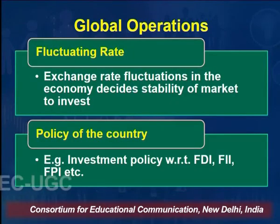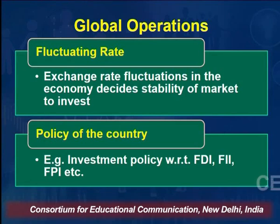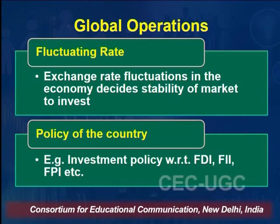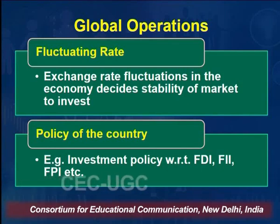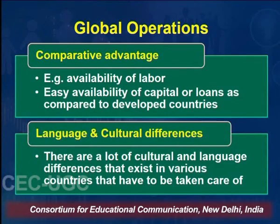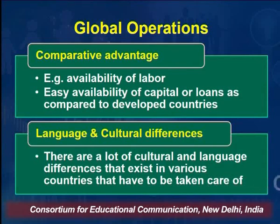If a multinational company is setting up its business facilities in a country, it also has to see what the exchange rate fluctuations of that country's currency are. That is also important from the international point of view. They also see what the policy of that country is with respect to investment — foreign direct investment (FDI), foreign institutional investors, foreign portfolio investors, etc. One also has to see in the global context what the comparative advantage in that particular country is. That is why many countries want to come to India because of the huge population and very large markets.